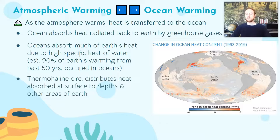The thermohaline circulation is going to distribute that heating, so the warming is mixed throughout the ocean. We've seen that in instances such as the Gulf Stream, which distributes some of that heat to Europe. There's going to be some mixing of this heating and it doesn't just all occur in one place. This is a really beneficial aspect that the oceans perform for Earth's climate.